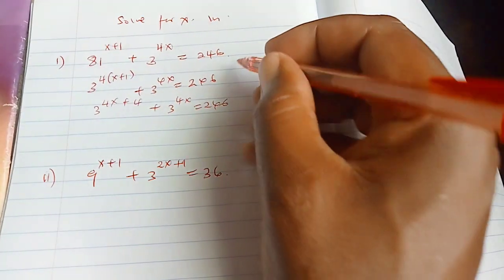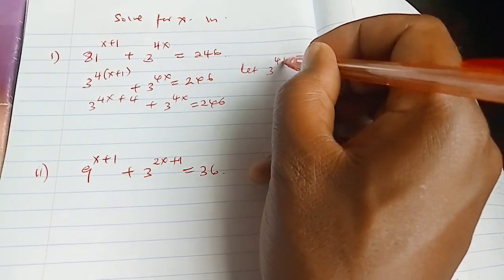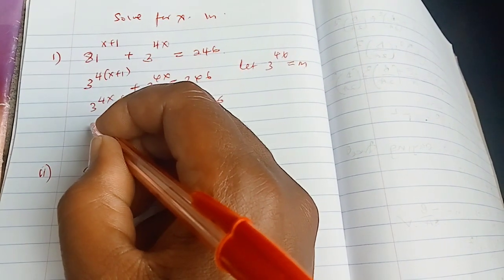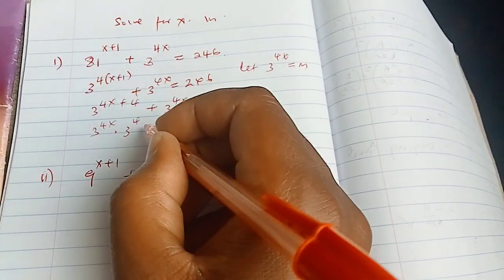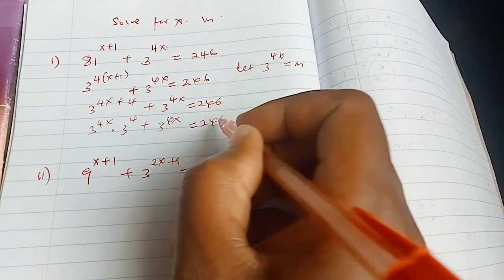So this is where now we have to let 3 to the power of 4x equals to m. So here it's like you have 3 to the power of 4x dot 3 to the power of 4 plus 3 to the power of 4x equals to 246.